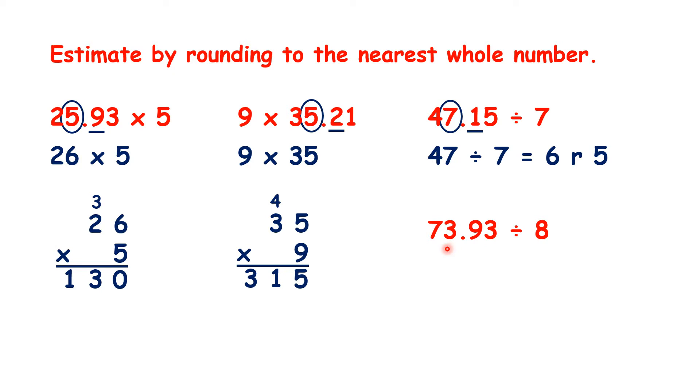And for this last question, 73.93 rounds to 74, 74 divided by 8 is 9 remainder 2.